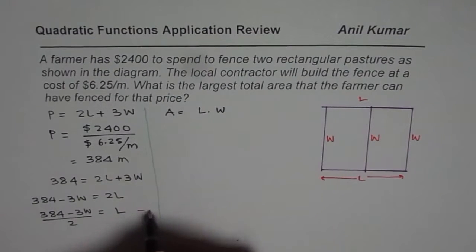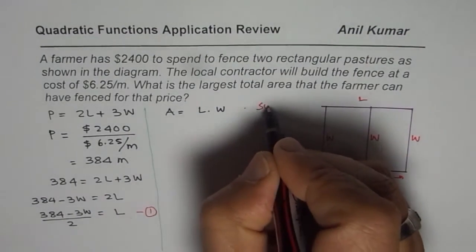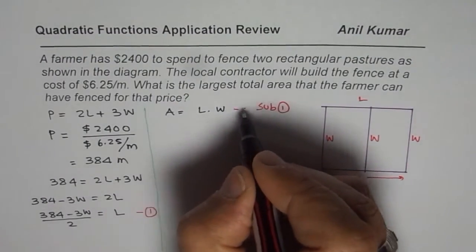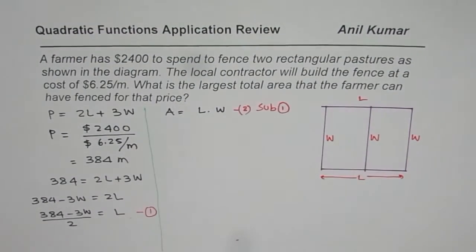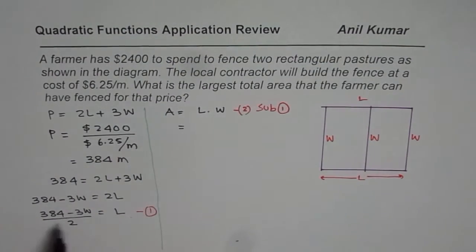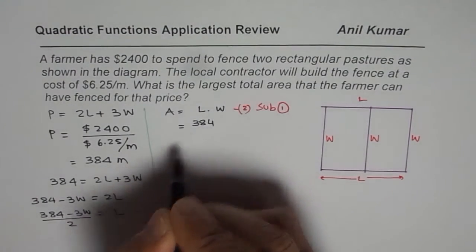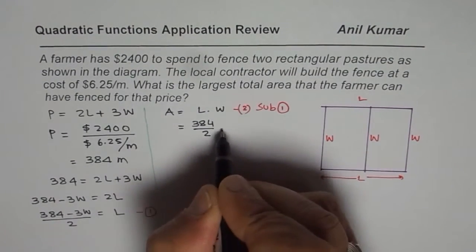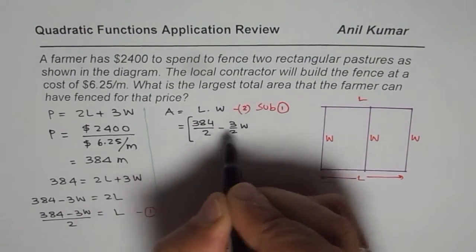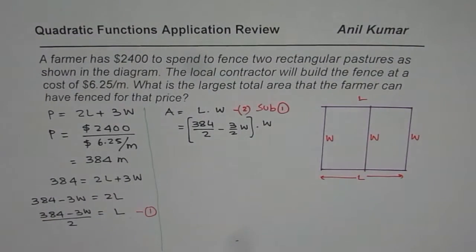We will substitute equation one into the area equation — call that equation two. So area becomes: (384/2 − 3W/2) times W, which is (192 − 1.5W) times W. That is the area expression in one variable.